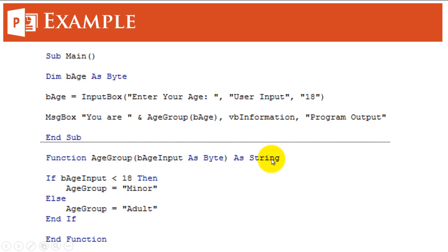That's why it is a string function. So what it does here is it checks the user input. If it is less than 18, it says minor. And if it is not, then it says you are an adult. This is the message box that we get.